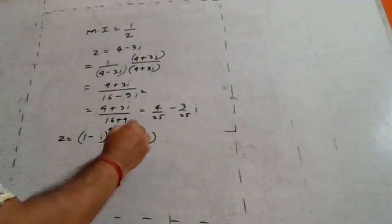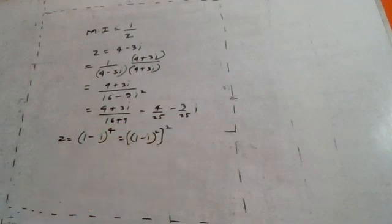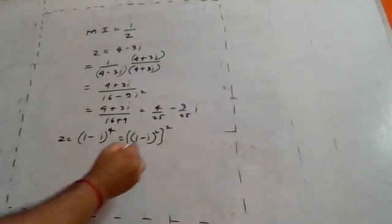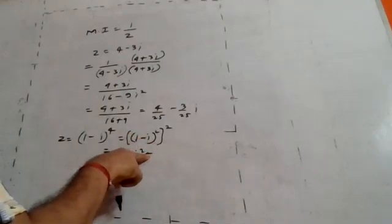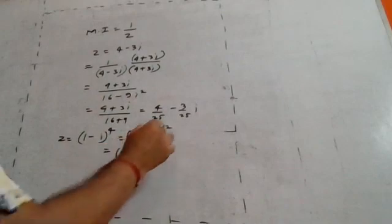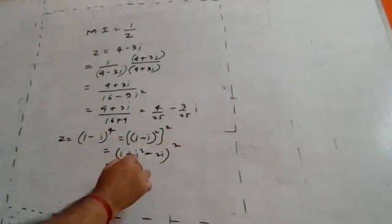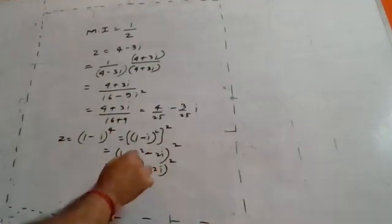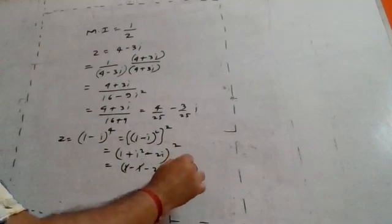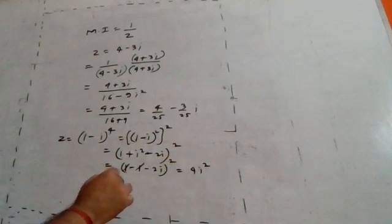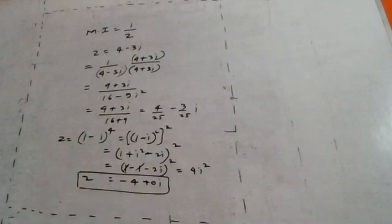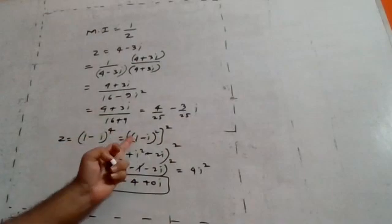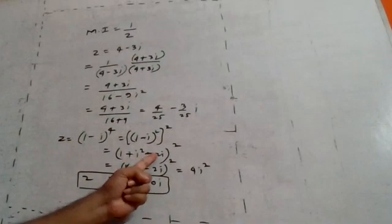To compute (1 - i)⁴, write it as [(1 - i)²]². Expanding (1 - i)²: 1 - 2i + i² = 1 - 2i - 1 = -2i. Now square -2i: (-2i)² = 4i². Since i² = -1, we get 4 × (-1) = -4. The final answer in standard form is -4 + 0i.